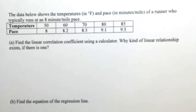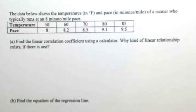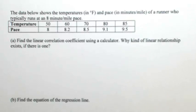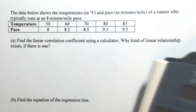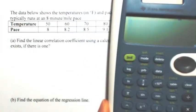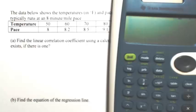We're going to find the linear correlation coefficient using a calculator. I'll show you a couple of different kinds of calculators. They must be two-variable calculators or this won't work. The first one I'll show you is the TI-30XS, which I actually prefer because it gives you tables and it's really nice.